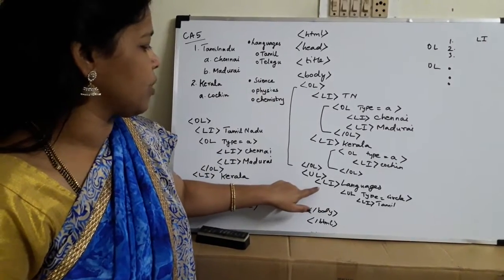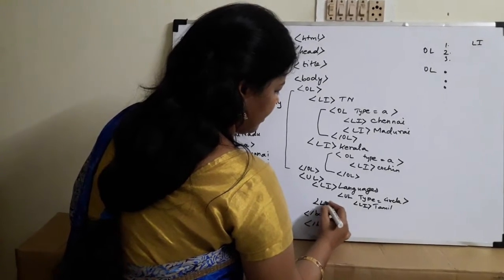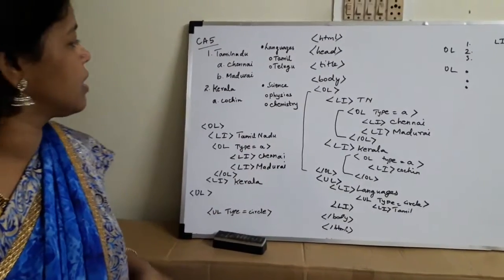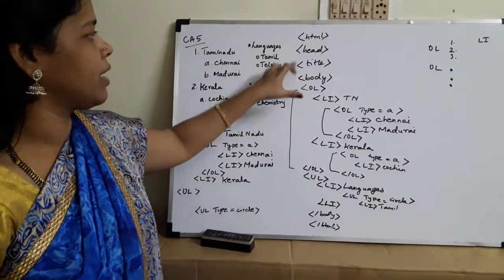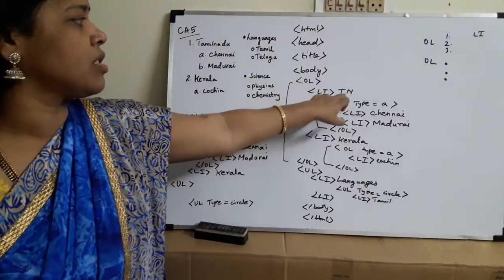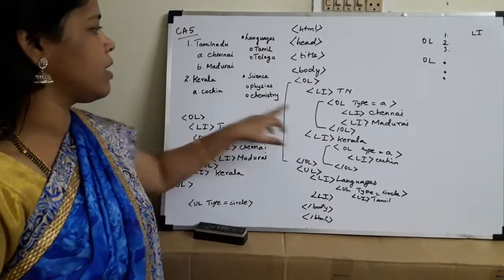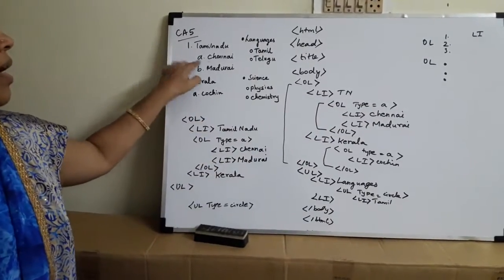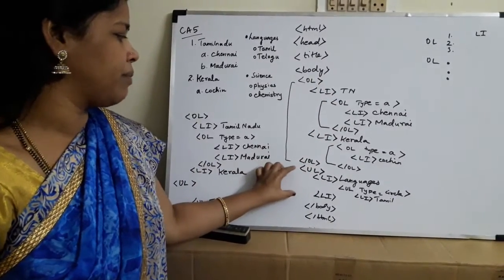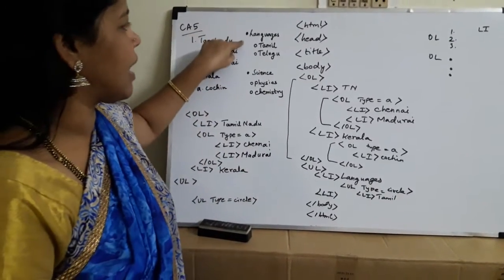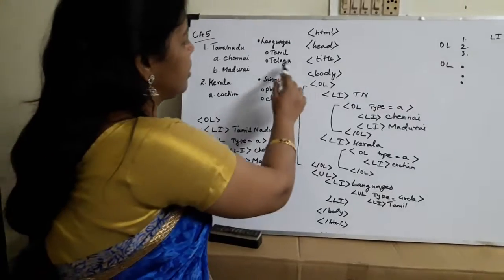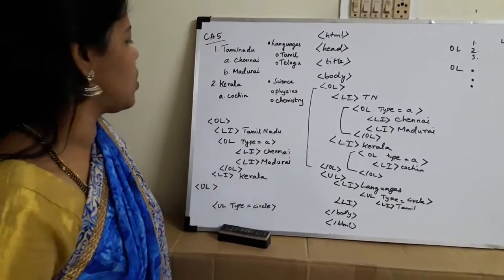The next LI item is 'Signs.' You should continue writing remaining items similarly. To recap: we used HTML tag, heading tag, title tag, body tag. For ordered list OL, we use LI for list items. Within Tamil Nadu, OL type=A gives A for Chennai and B for Madurai. For the UL unordered list, LI is 'Languages,' and inside it UL type=circle gives an empty circle for Tamil and Telugu.